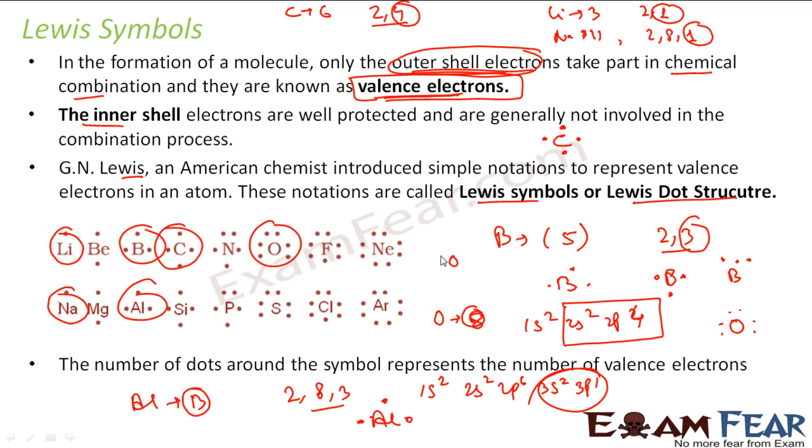You can also write 6 electrons like this. Both are same actually. So the trick here is find the electronic configuration, find the valence electron, write the symbol of the atom, and surround this with the number of valence electrons. Each dot represents a valence electron.